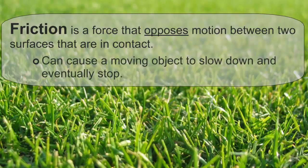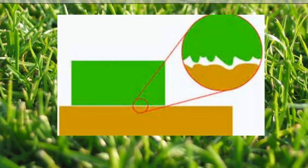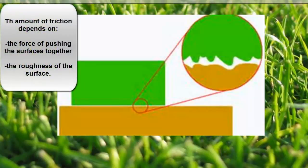Friction can cause a moving object, such as a ball or a puck, to slow down and eventually stop. Friction occurs because the surface of any object is rough — even surfaces that feel smooth are covered with microscopic hills and valleys. When two surfaces are in contact, the hills and valleys of one surface stick to the hills and valleys of the other surface, and this contact causes friction. The amount of friction depends on factors such as the force pushing the surfaces together and the roughness of the surface.